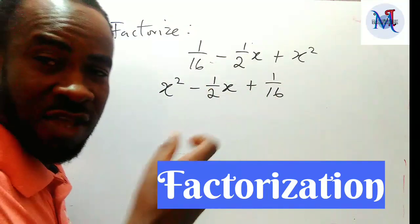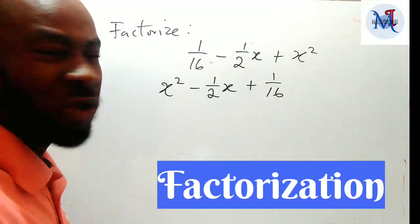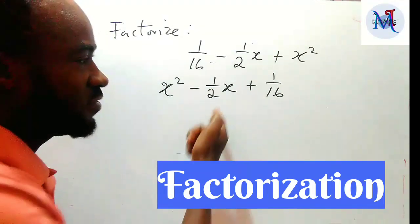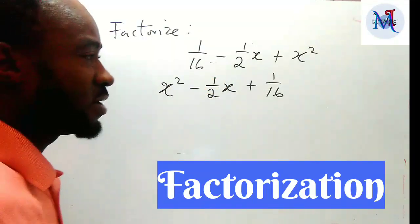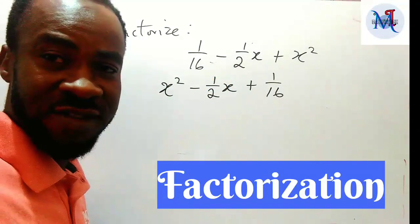If the last term is a perfect square and you are able to take its square root and multiply by 2 and it gives you the middle term, preserving the sign that is there, then it means that we can easily factorize.